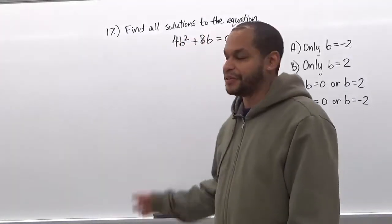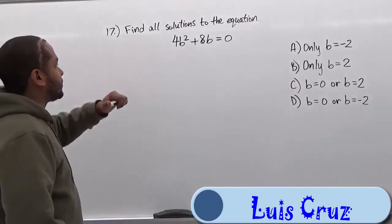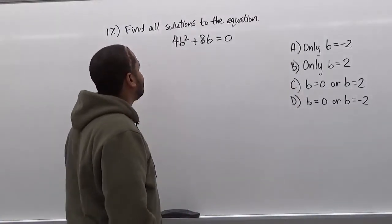Welcome to HelpYourMath.com. Today we'll be doing problem number 17 here, and we'll be finding all solutions to the equation 4b squared plus 8b equals 0.